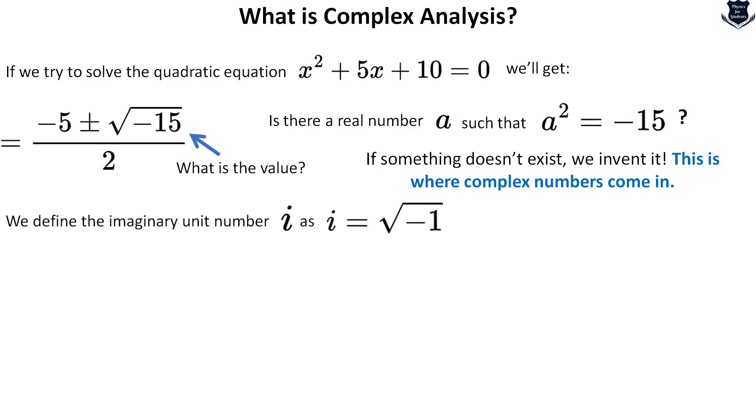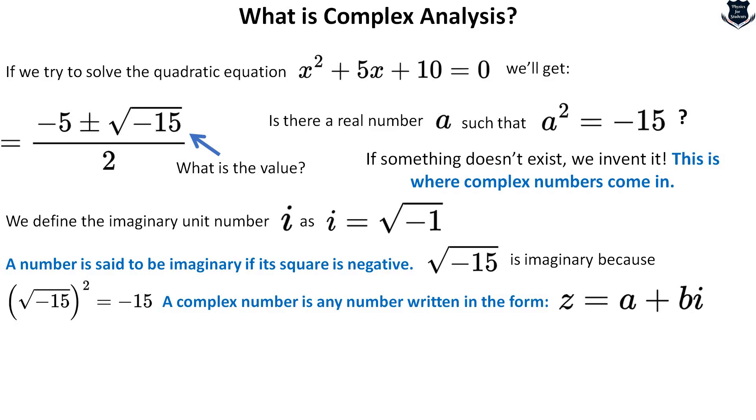That is where complex numbers come in. We define the imaginary unit i as square root of minus 1. A number is generally said to be imaginary if its square is negative. Square root of minus 15 is imaginary because square root of minus 15 squared equals minus 15. A complex number is generally taking a format z equals a plus bi where i is the imaginary number.